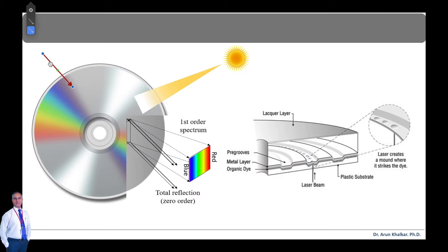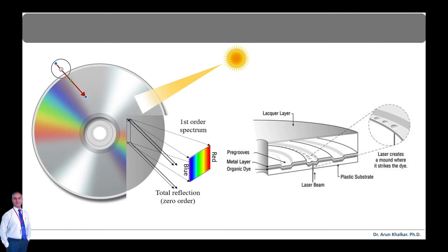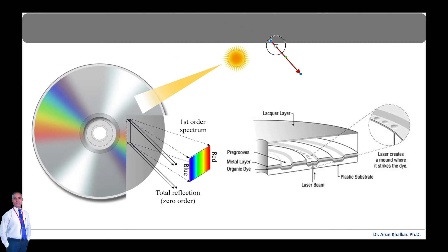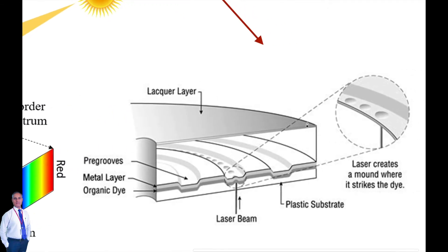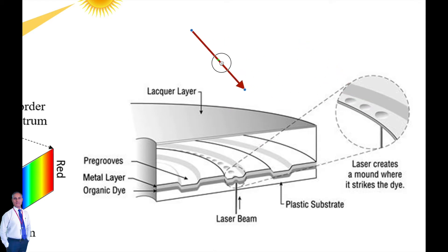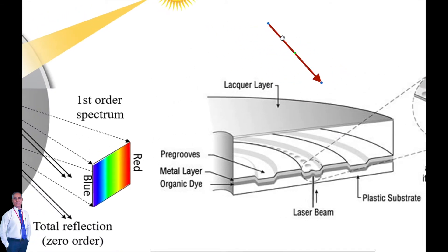Ordinary pressed compact discs or DVDs — digital versatile discs — are everyday examples of diffraction gratings and can be used to demonstrate the effect by reflecting sunlight on them onto a white wall. This is a side effect of their manufacture, as one surface of a CD has many small pits in the plastic arranged in a spiral, with a thin layer of metal applied to make the pits more visible. You can see the grooves of a compact disc that act as a grating and produce rainbow-like reflections.